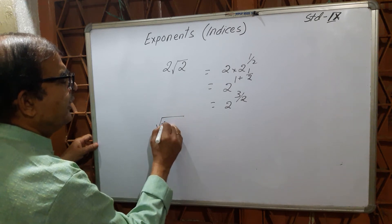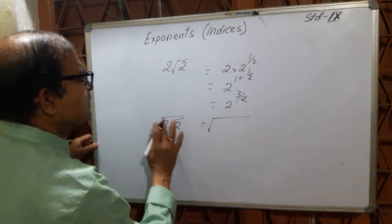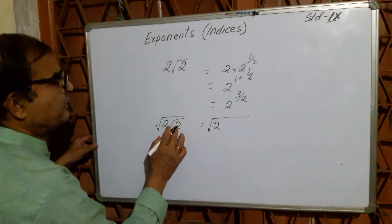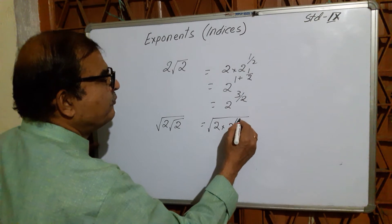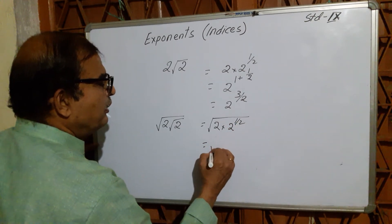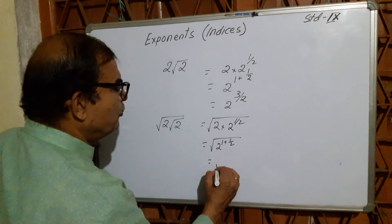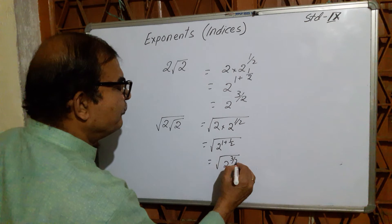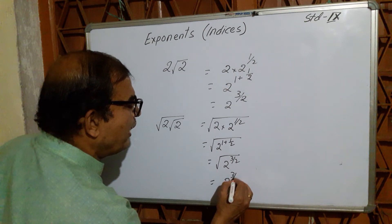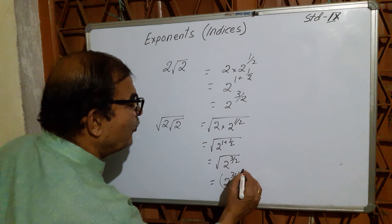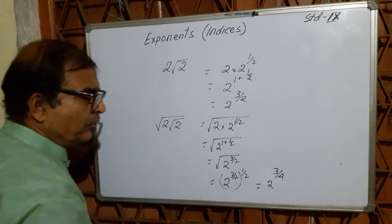If the question is 2√2 — that is, the square root of 2² — first eliminate the square root: write it as 2^2 × 2^(1/2). Next step: 2^(2 × (1 + 1/2)) = 2^(2 × 3/2). Then eliminate the remaining square root sign: 2^(3/2 × 1/2) = 2^(3/4).